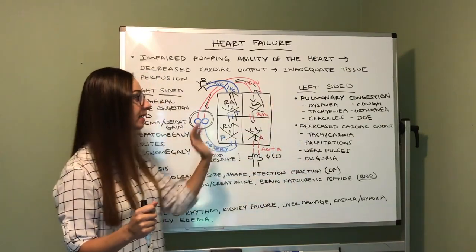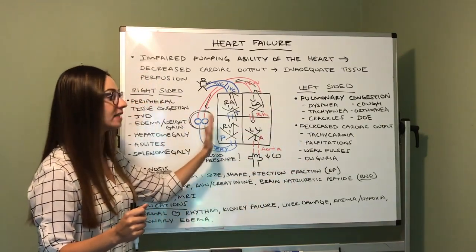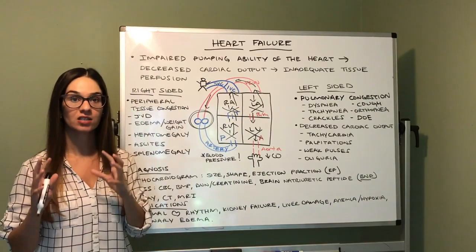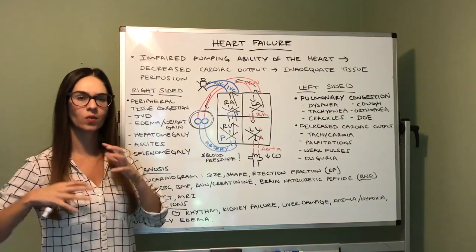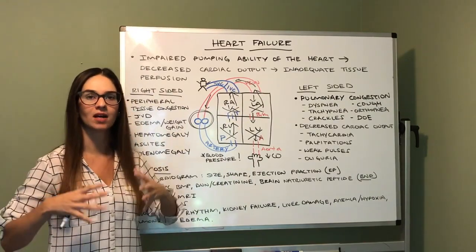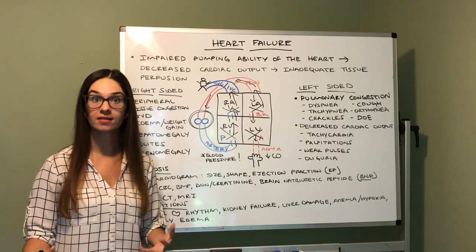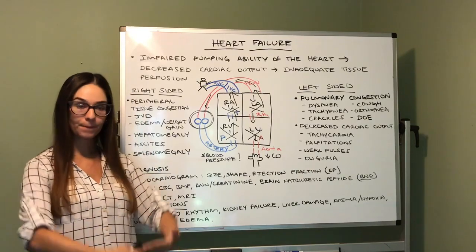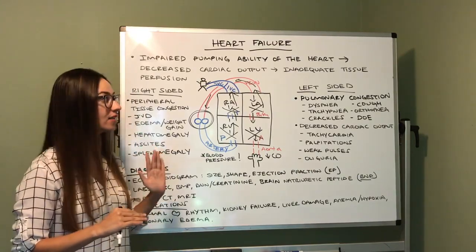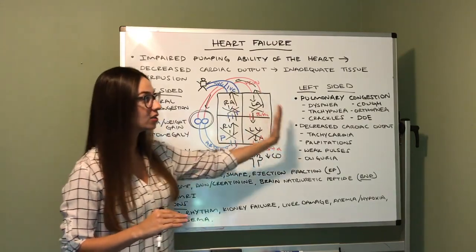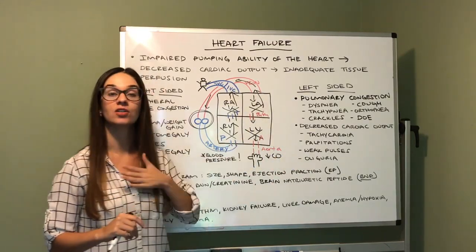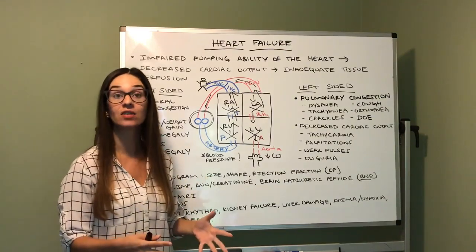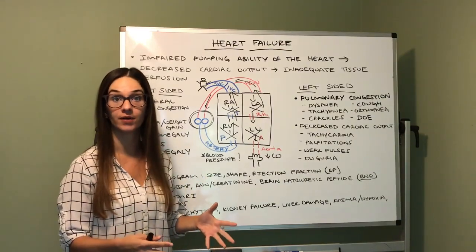So again — right-sided heart failure, think peripheral tissue congestion: weight gain, edema, enlarged organs, JVD, big bellies, ascites. Left-sided, you need to think lungs and decreased cardiac output. I've tried to keep it very basic and I hope this helps you.